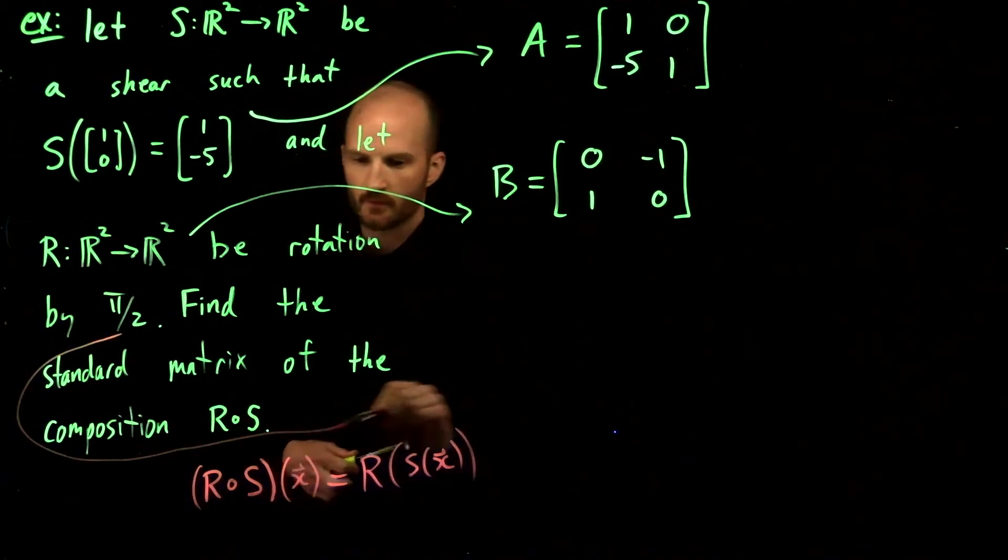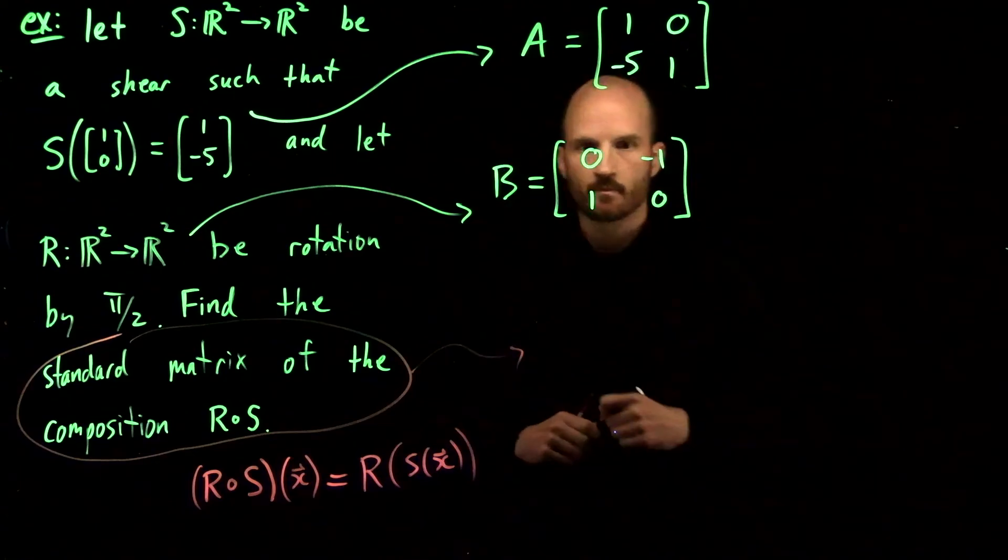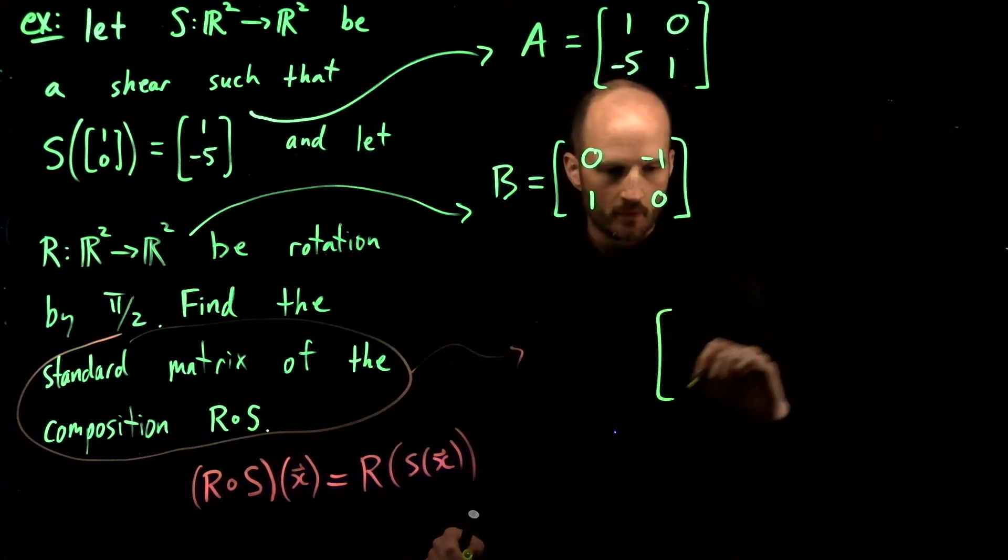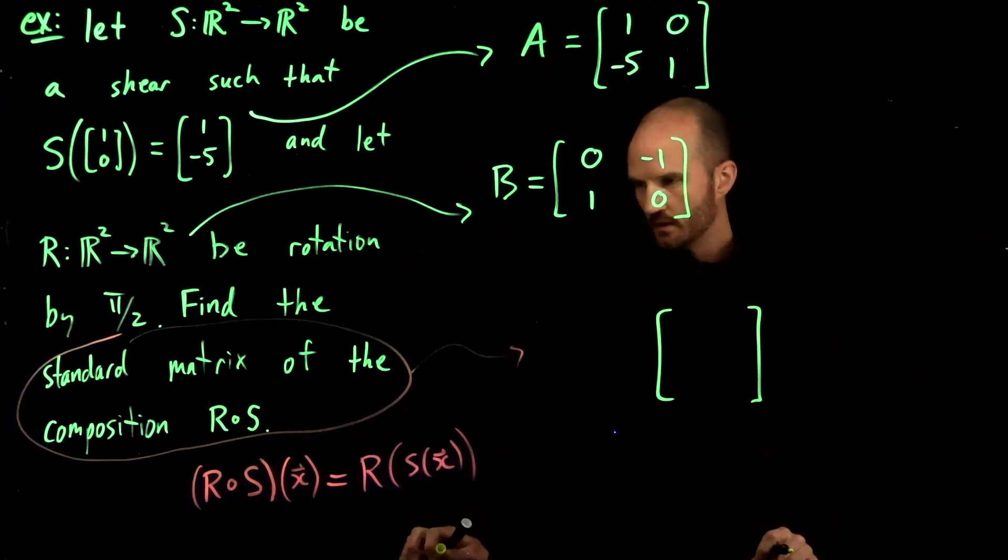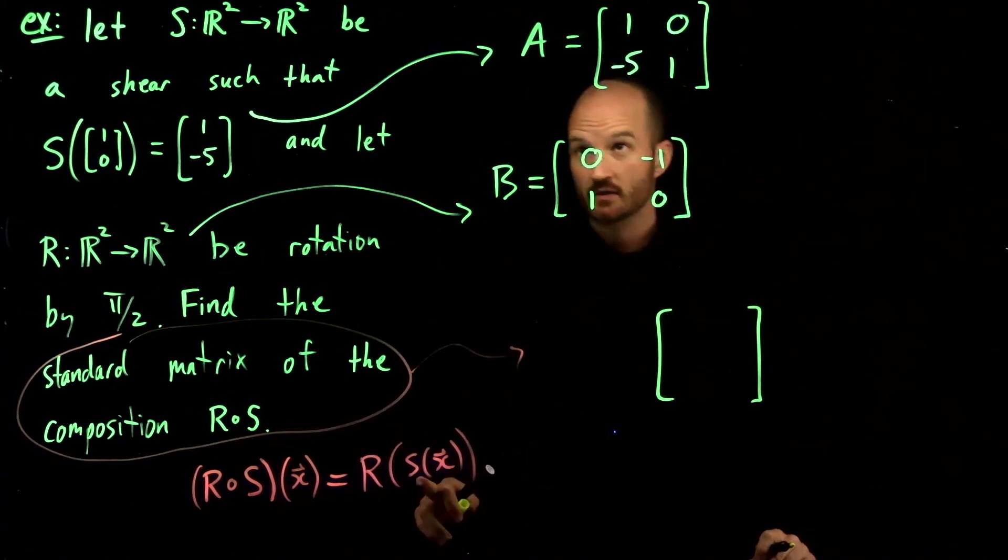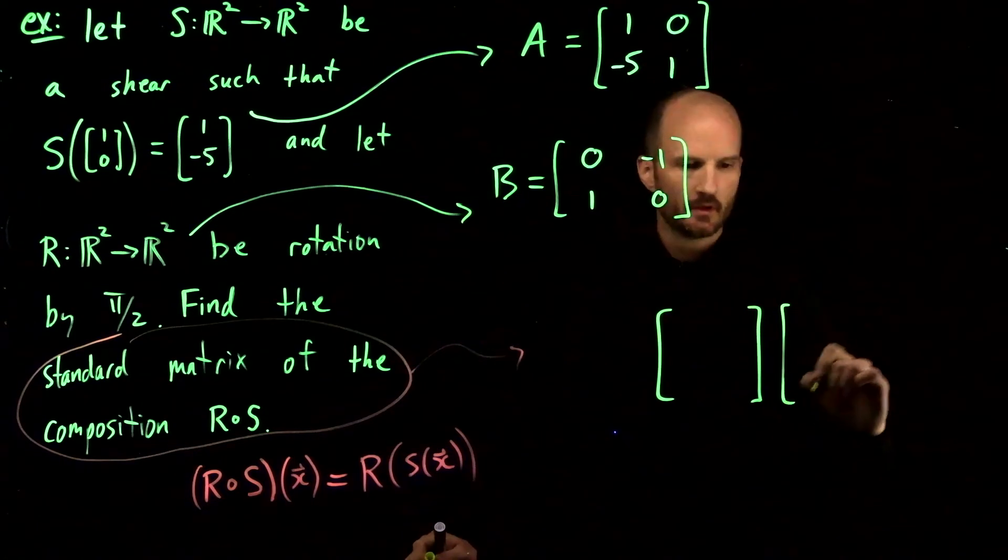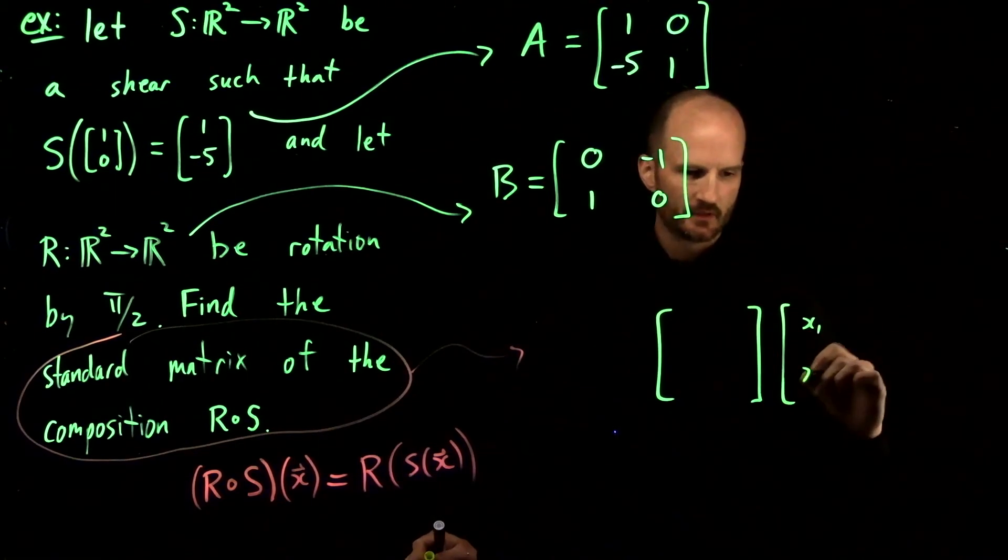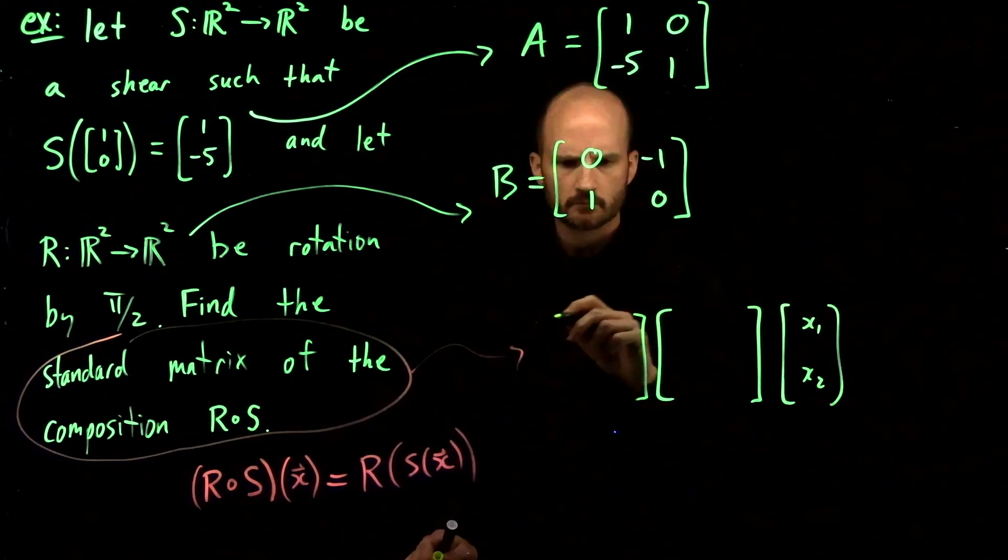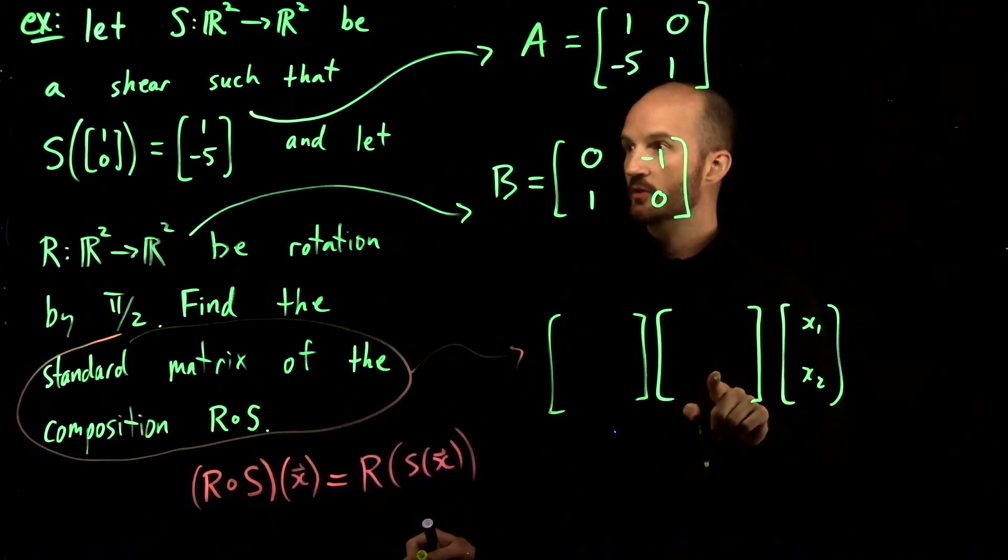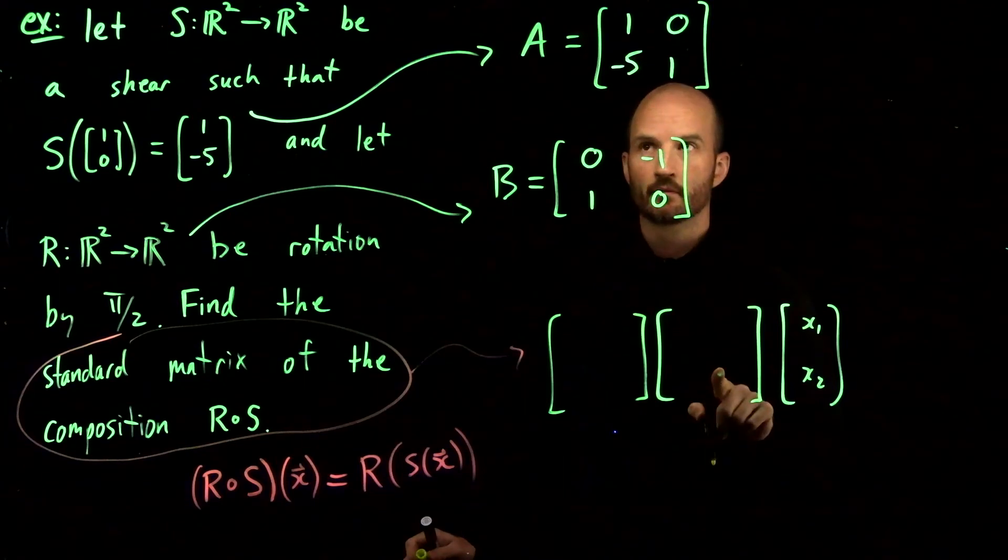The standard matrix for the composition—in the end, I want a transformation that does S first. S is the first thing that happens. If I have a vector x1, x2, the first matrix to hit it is S. So I should be putting my matrix A here.